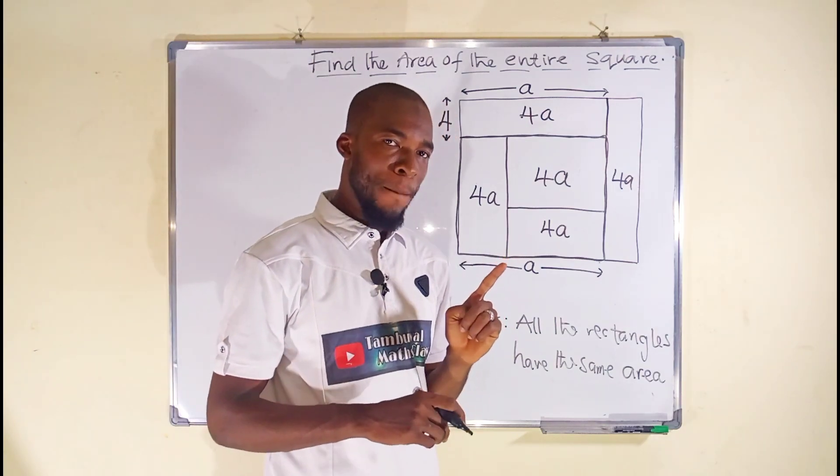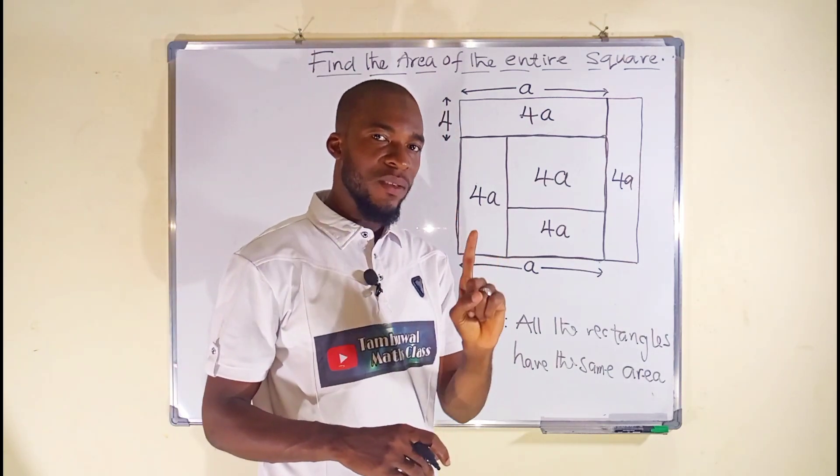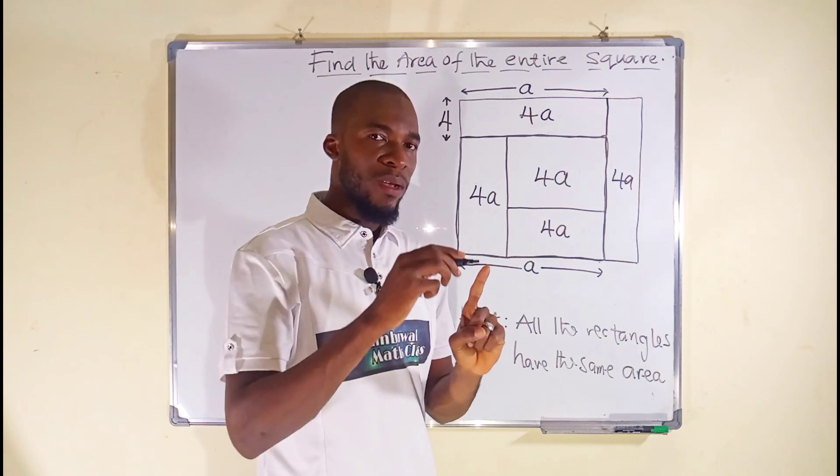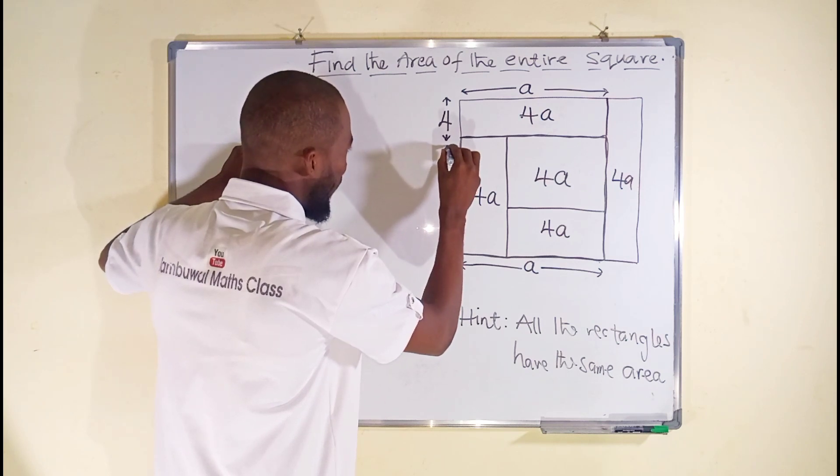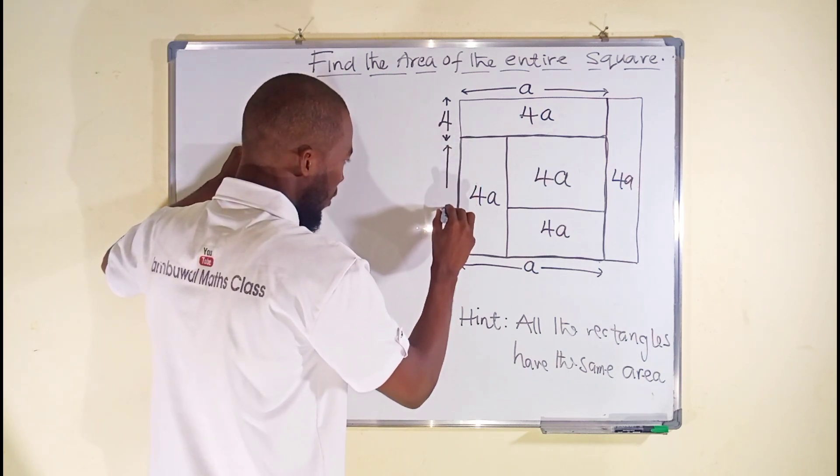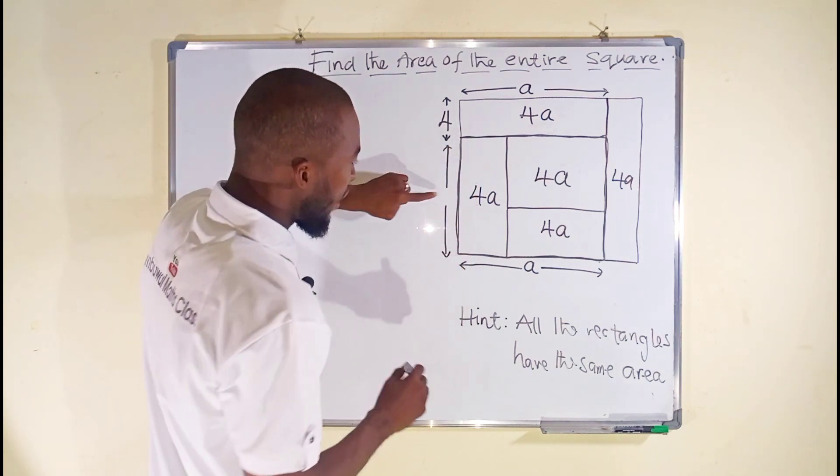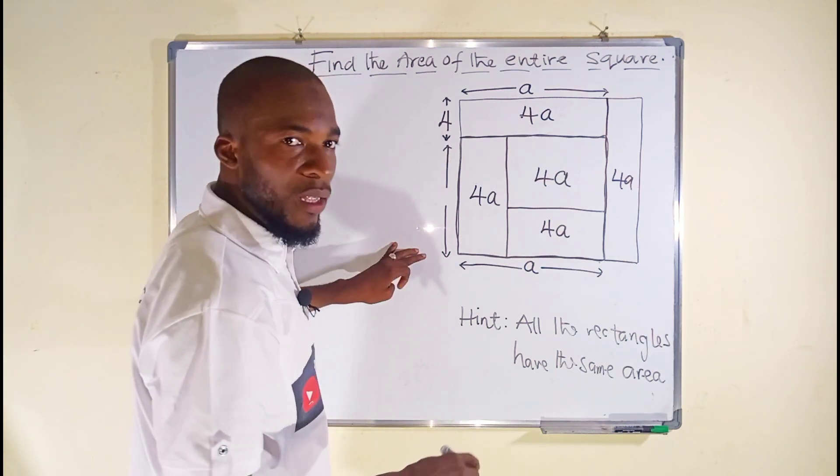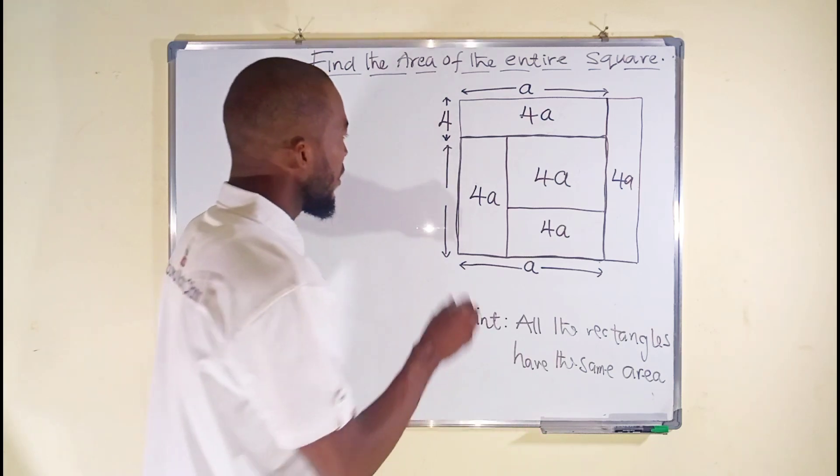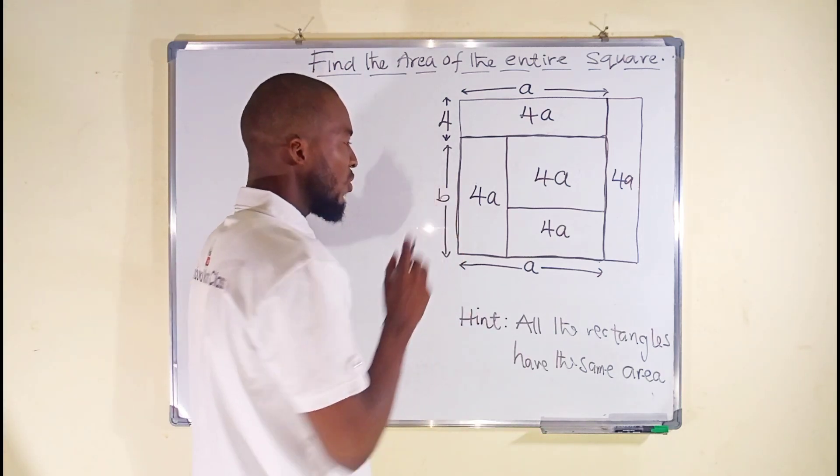Remember I told you if at least one side is given to you, you can just square it to get the area of a square. So let us find the length of this end. Whatever we obtain we can add it to 4 to get the total length here, then let us square it to get the area. So let's call it b since it is unknown.